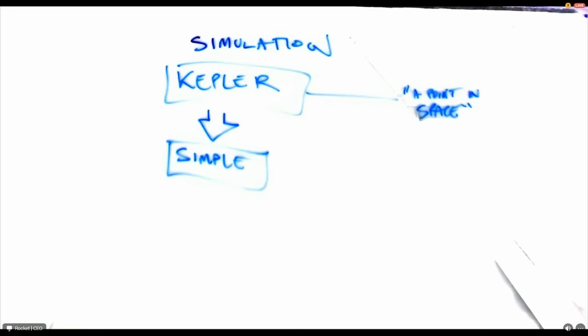So if you imagine that as like a point in space, and we simulate all its orbital characteristics. So I should probably say like this is like the orbit. That black is going to be a lot easier to see.